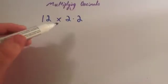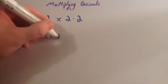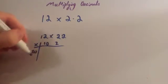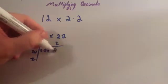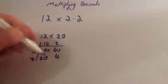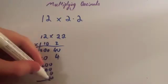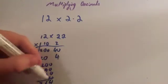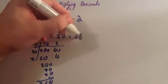Now we're going to look at 12 multiplied by 2.2. Remember, you ignore the decimal point, so we get 12 times 22. Using the grid method: 10 and 2, 20 and 2. 20 times 10 is 200. 20 times 2 is 40. 2 times 10 is 20. And 2 times 2 is 4. So we've got 200, 40, 20, and 4. When we add those together, we get 264. So 12 times 22 is 264.